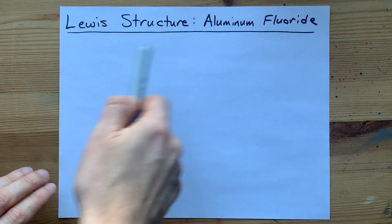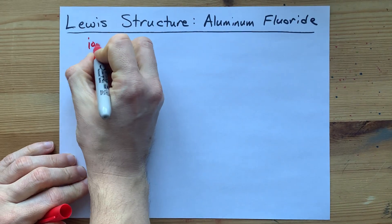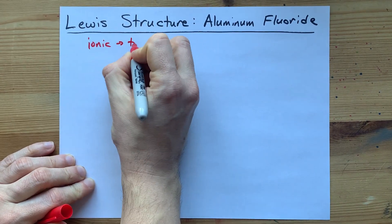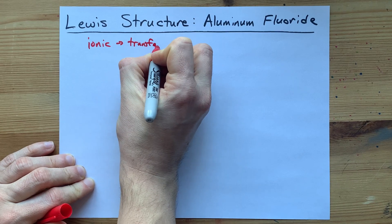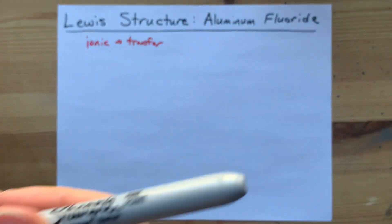What do you get when you combine a metal and a non-metal? You get an ionic compound because there is a transfer of electrons from the metal to the non-metal.